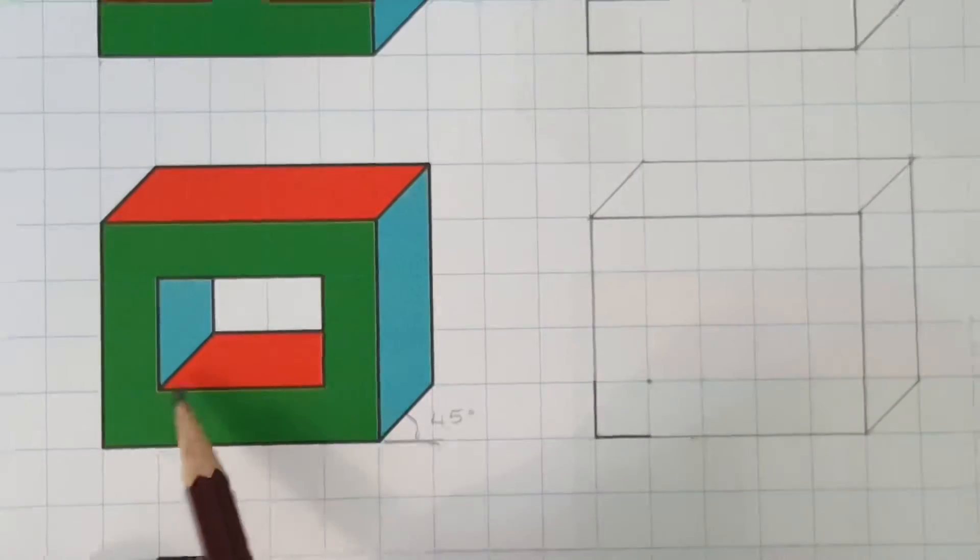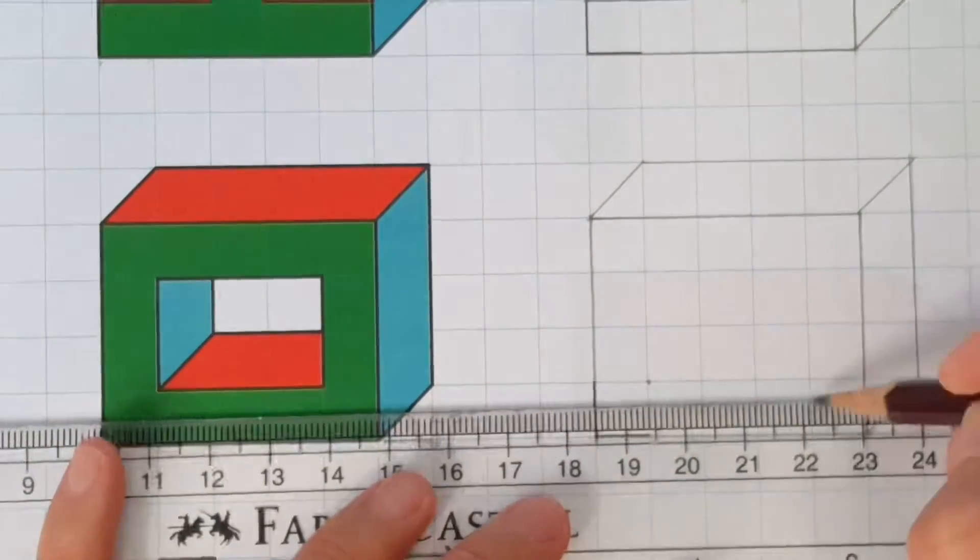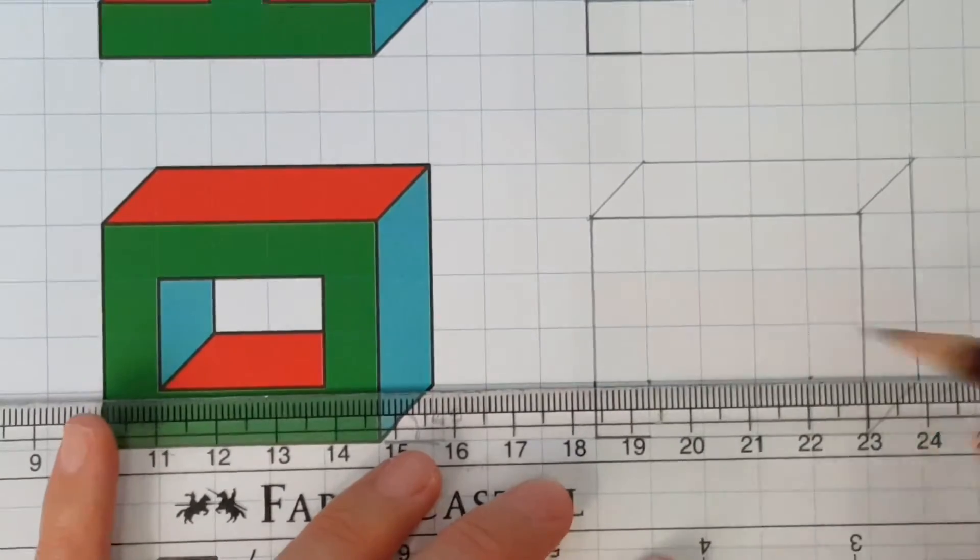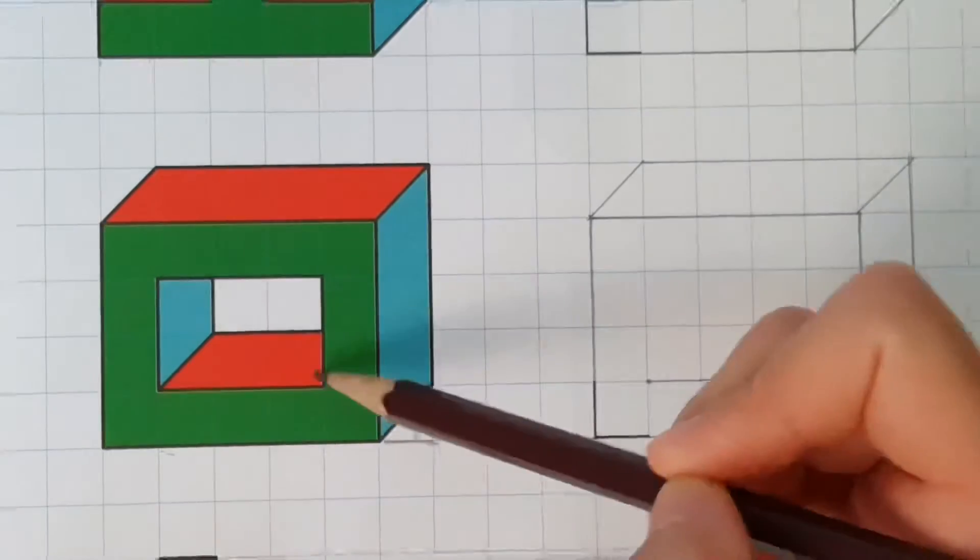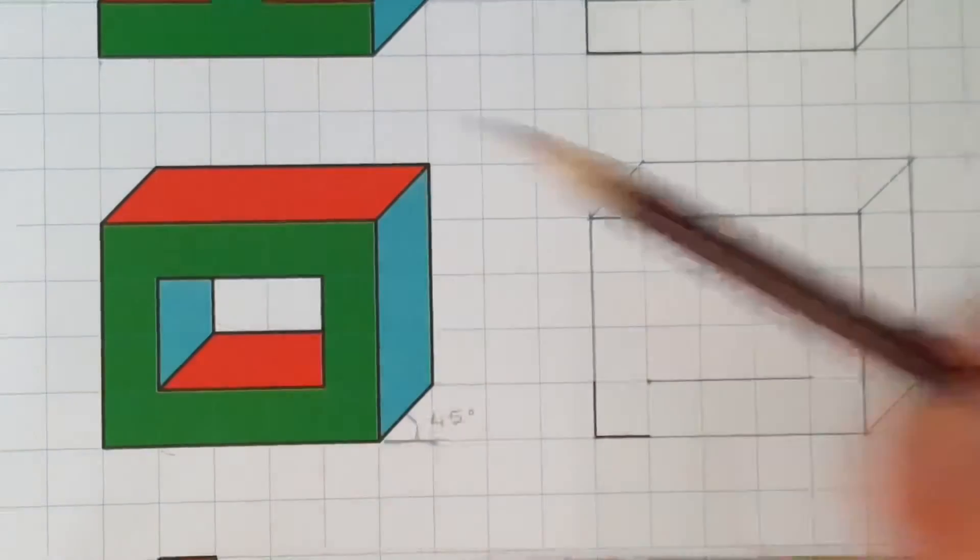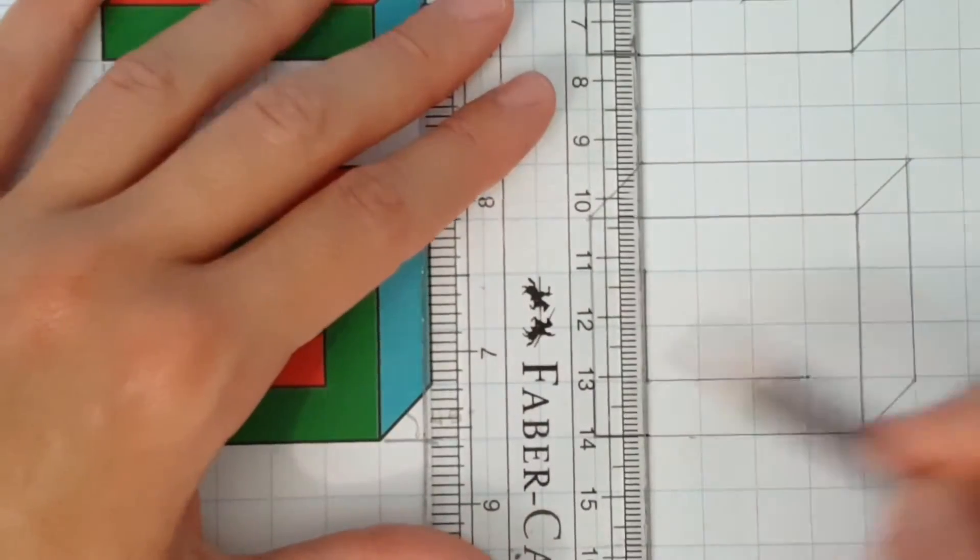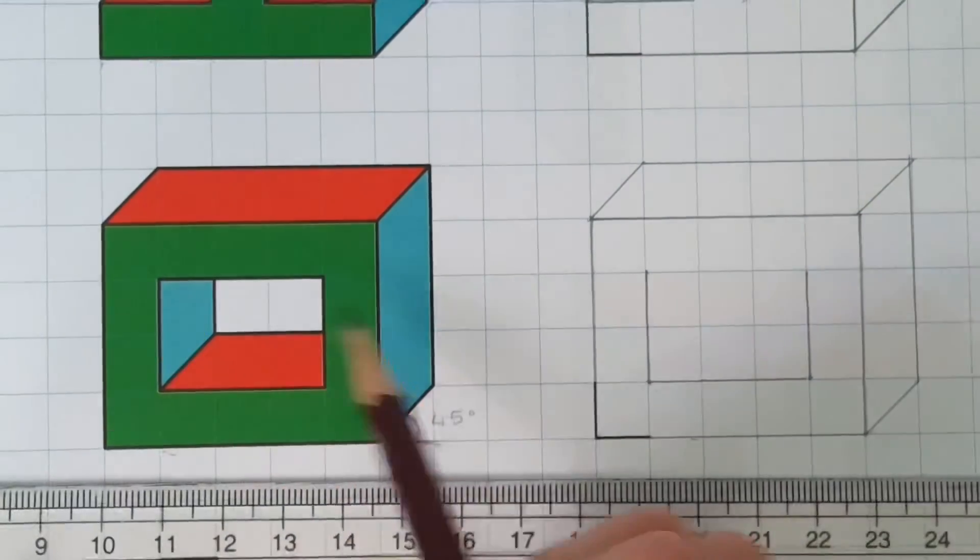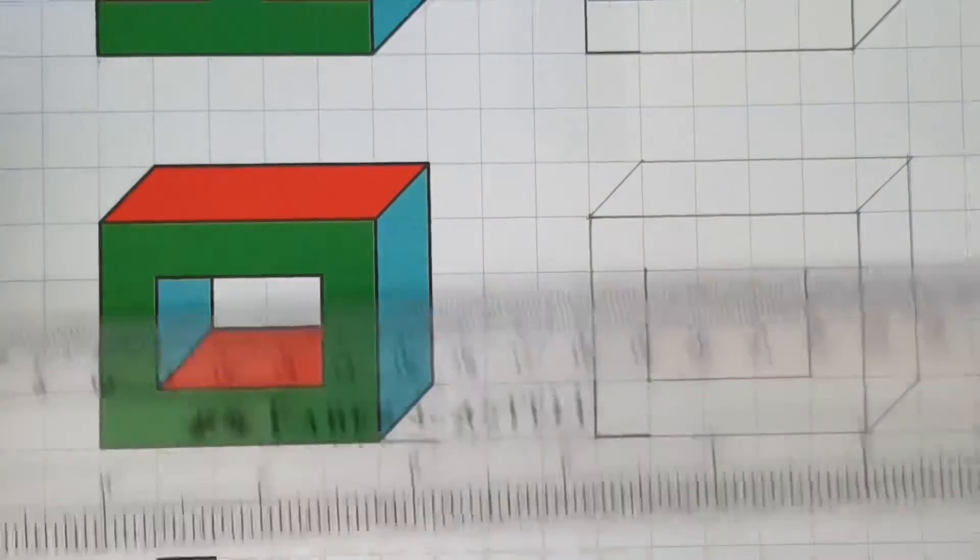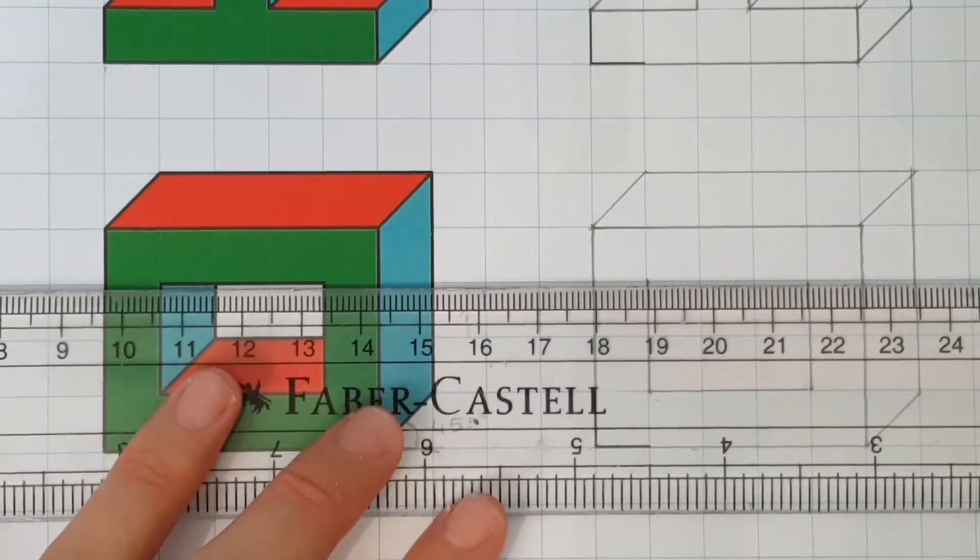Now the baseline of this rectangle is just three squares. Now let's draw the vertical lines which are only two squares up. Now let's join these two lines together by drawing the top horizontal line.